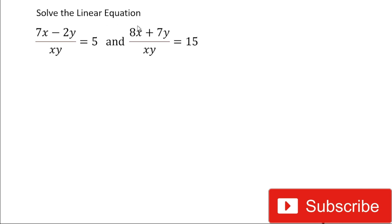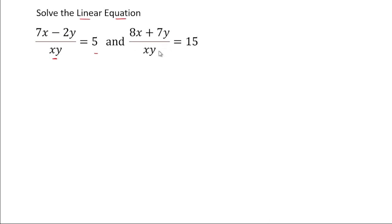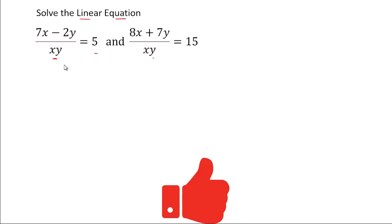Hey friends, welcome back to my YouTube channel. Today in this video we will solve this linear equation. The given linear equation is 7x minus 2y divided by xy is equal to 5, and another equation is 8x plus 7y divided by xy is equal to 15. Do not forget to give thumbs up to the video and subscribe to my YouTube channel.